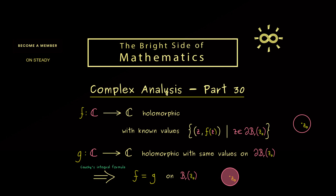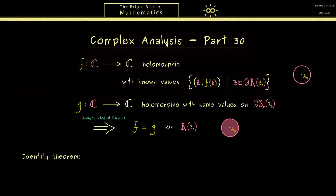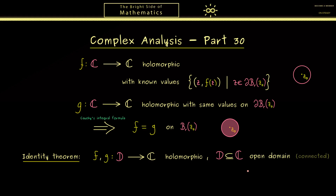And now exactly this fact the identity theorem will generalize. In fact the identity theorem will also tell us what happens outside of the disk. For this reason we are also allowed to choose a general open domain for the domain of both functions. So as before we have again two holomorphic functions, and d should be an open domain — so an open set which is also path connected.